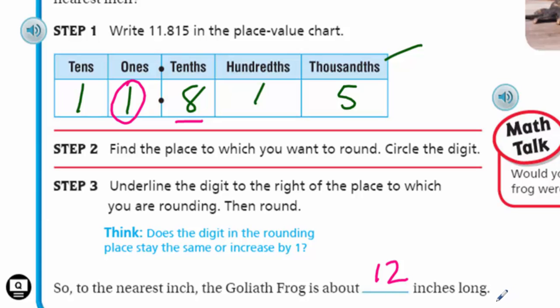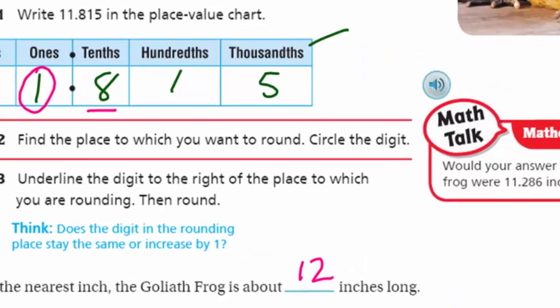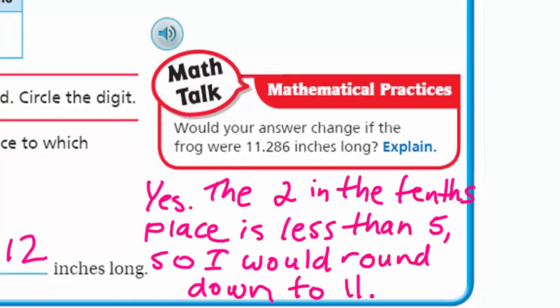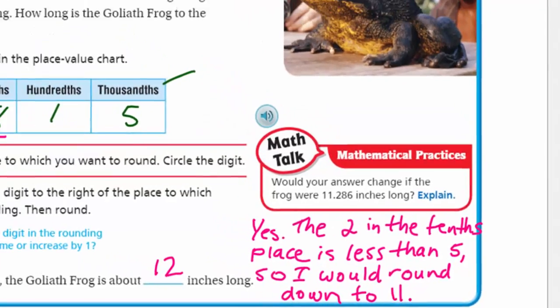Math talk: would your answer change if the frog were 11 and 286 thousandths inches long? Looking at it again, I'd circle the 1 in the ones place and look to the right - there's a 2 in the tenths place. Two is less than five, so four or less, let it rest. The 11 wouldn't change, and everything else turns to zero. Yes, the 2 in the tenths place is less than five, so I would round down to 11, not up to 12.